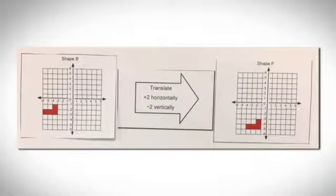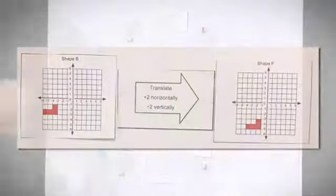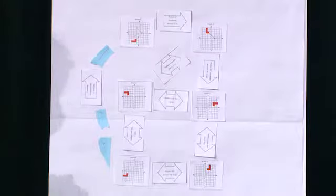And then B to F is a translation positive two units horizontally and negative two units vertically and that's not true of the reverse, so it's a singular direction.